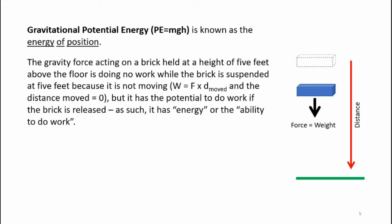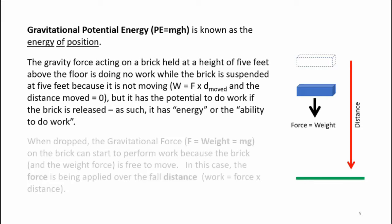In the example at the right, the gravity force acting on a brick held at a height of five feet above the floor is doing no work while the brick is suspended at five feet, because it is not moving. We know that W is equal to force times distance, and if the distance moved is zero, the work is zero. But this brick has a potential to do work if it is released — as such, it has energy, or the ability to do work.